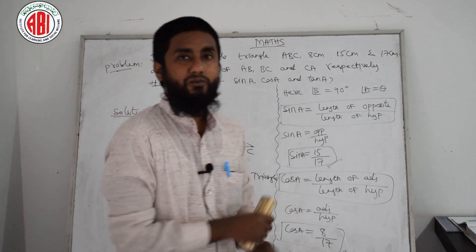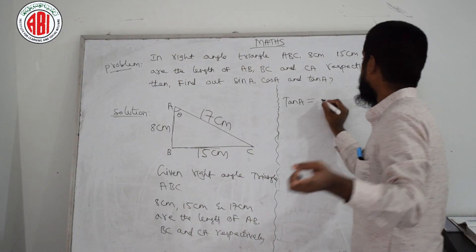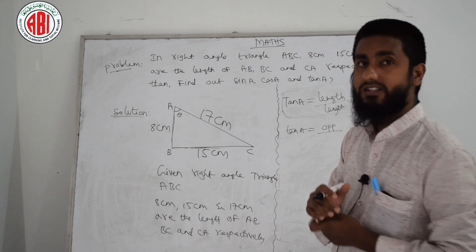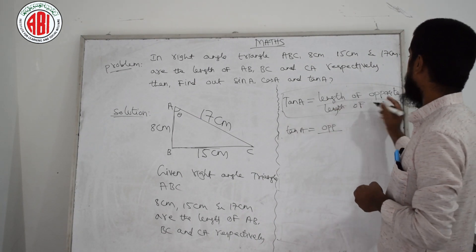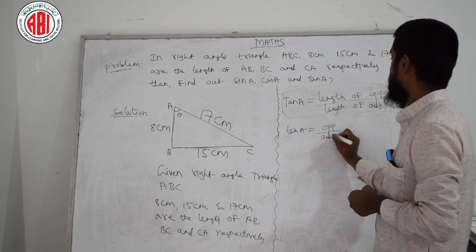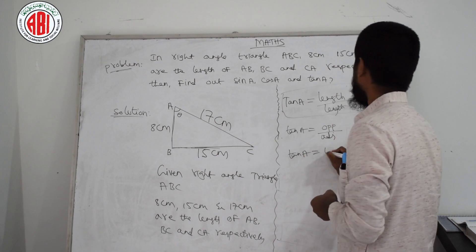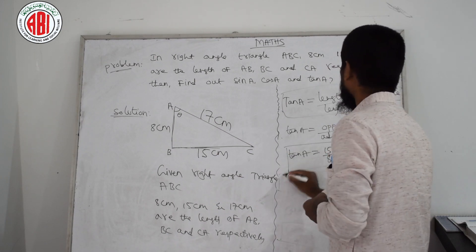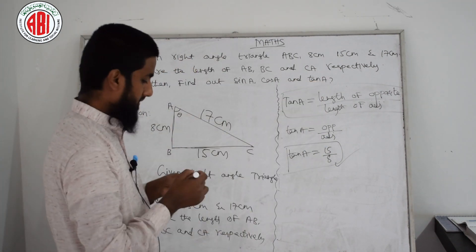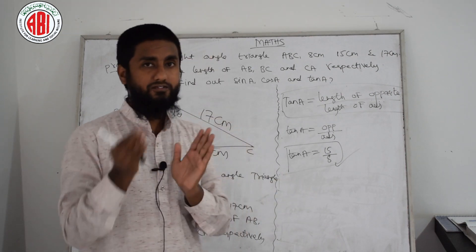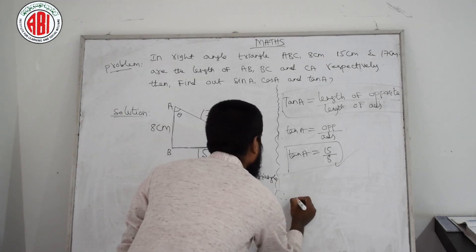Hope you copied. Now moving to tan A. Tan A is nothing but the length of opposite by length of adjacent, that is opposite by adjacent. We know tan A equals opposite by adjacent. Opposite here is 15 centimeters and adjacent is 8 centimeters. So tan A equals 15 by 8. Therefore, you just need to apply the formulas to get the answer.